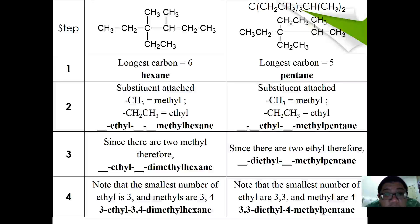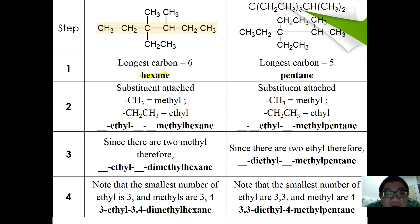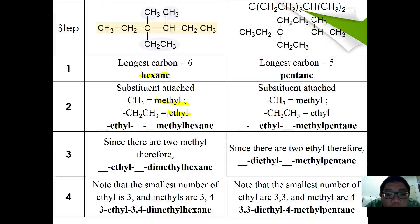Let's apply the four steps to an example. First, find the longest chain — here it is six carbons, so the parent chain is hexane. Next, find the substituents: there is an ethyl group and two methyl groups. According to alphabetical order, ethyl comes before methyl.